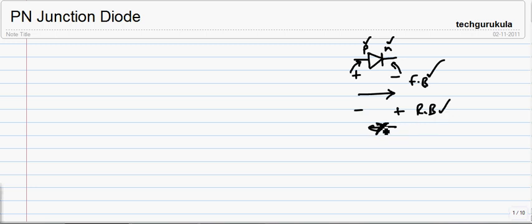To understand how this diode behaves, we go into the P-N junction diode — how it actually works — and we start analyzing with equations and with qualitative analysis on this P-N junction diode.